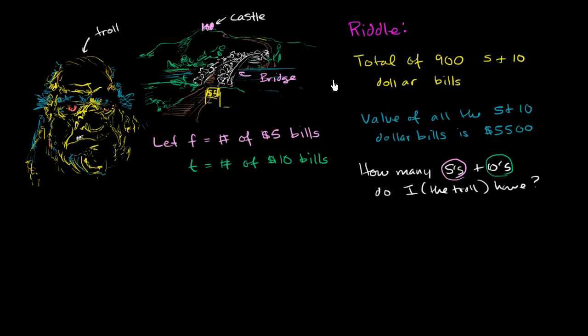So let's focus on the first clue. Can I represent this clue that the total of 900, $5 and $10 bills, or can I represent that mathematically, that I have a total of 900, $5 and $10 bills?